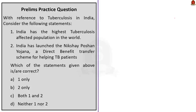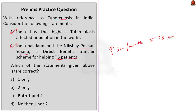The first practice question is on tuberculosis with two statements. Statement 1: India has the highest tuberculosis-affected population in the world — this is correct. Statement 2: India has launched the Nikshay Poshan Yojana, a direct benefit transfer scheme for helping TB patients — this is also correct. The scheme provides Rs. 500 per month as nutritional support to each notified TB patient for the duration of anti-TB treatment, delivered through direct benefit transfer to bank accounts. Since both statements are correct, the answer is option C, both 1 and 2.